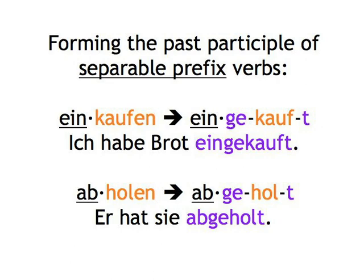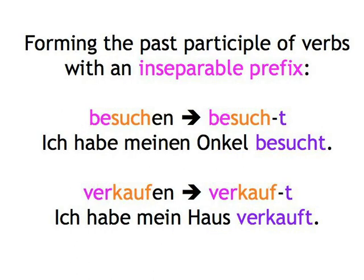Regular verbs with inseparable prefixes like besuchen or verkaufen already have a prefix, so they don't get a ge- at the beginning — only a -t at the end. Besuchen → besucht. Ich habe meinen Onkel besucht. Verkaufen → verkauft. Ich habe mein Haus verkauft.